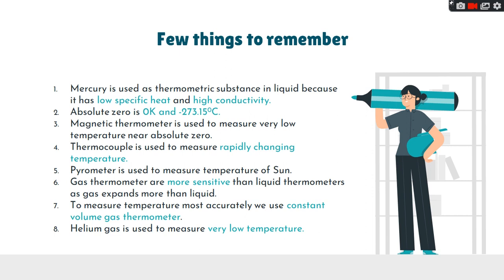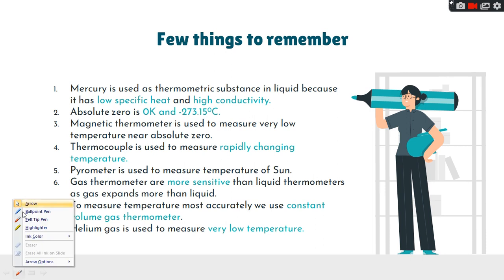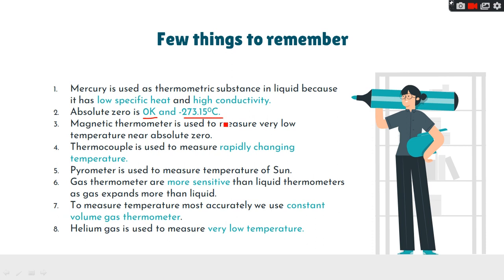Mercury is used as a thermometric substance in liquid because it has low specific heat and high conductivity. Absolute zero is zero Kelvin or minus 273.15 degree centigrade. Magnetic thermometer is used to measure very low temperature, which is near absolute zero.